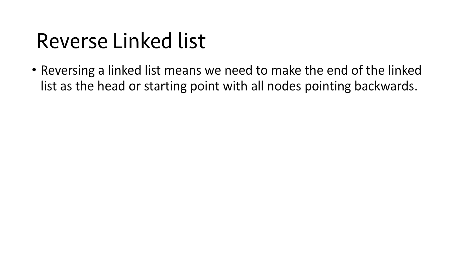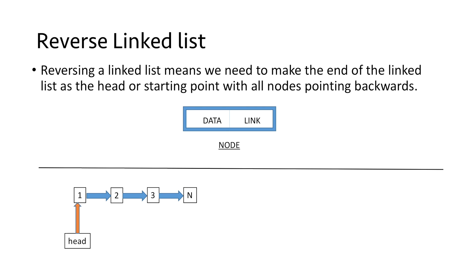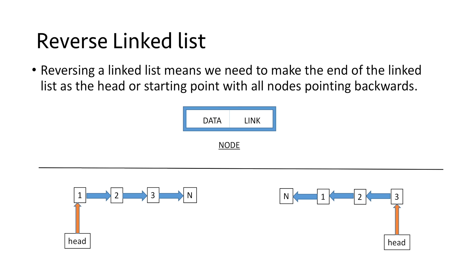Reversing a linked list means we need to make the end of the linked list the head or starting point, with all the nodes pointing backwards. For example, if we take a linked list with nodes 1, 2, and 3 with node 1 as the starting point, the reverse would have the head pointer pointing to 3, node 3 pointing to node 2, node 2 pointing to node 1, and node 1 pointing to null.